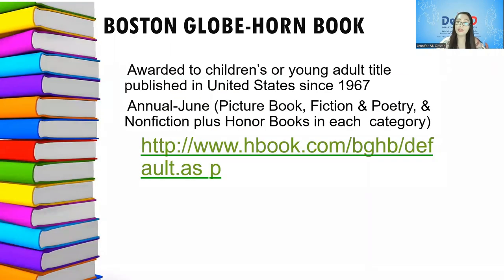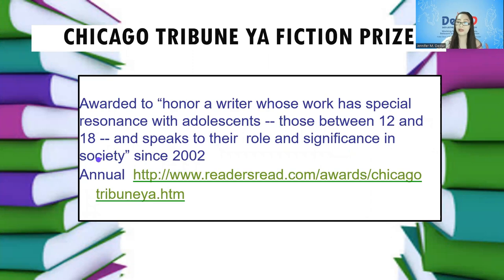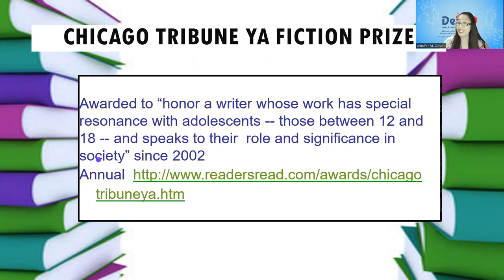Next we have the Boston Globe Horn Book Award, awarded to children's or young adult titles published in the United States since 1967, given annually in June. It's for picture book, fiction, and poetry as well as non-fiction, plus honor books in each category. We also have the Chicago Tribune Young Adolescent Fiction Award, awarded to honor a writer whose work has special resonance with adolescents between ages 12 and 18 and speaks to their role and significance in society since 2002, given annually.